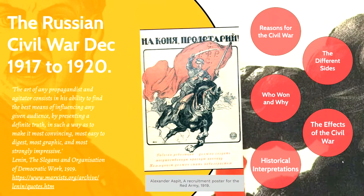We're going to look at five major topics: the reasons for the Civil War, the different sides that fought in the Civil War, who won and why, the effects of the Civil War particularly on the Bolshevik Party, and finally historical interpretations of the Civil War. You can see a poster by Alexander Aspit, which is a recruitment poster for the Red Army from 1919.